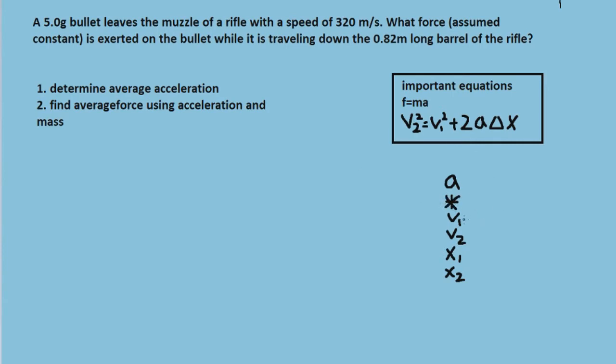Now we're given the initial velocity because it starts from rest, and we're given the final velocity of 320 meters per second. And we're going to put our x initial at zero, and then our final x value is going to be at the end of the barrel, which is 0.82 meters.